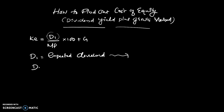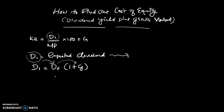D1 is equal to D0 into 1 plus growth rate. D0 is the previous year dividend.